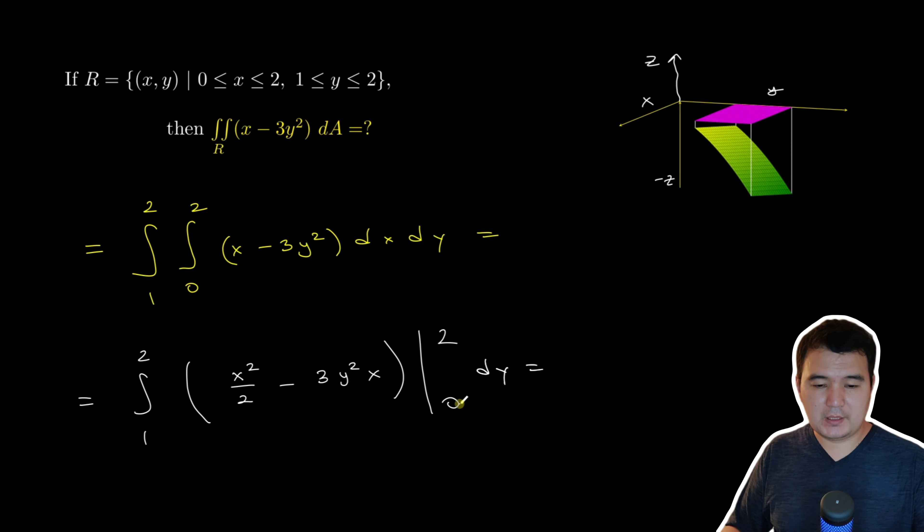So if you plug 0 to this expression, so we have x here and x here that makes everything 0. So basically the result of this part is just plugging 2.